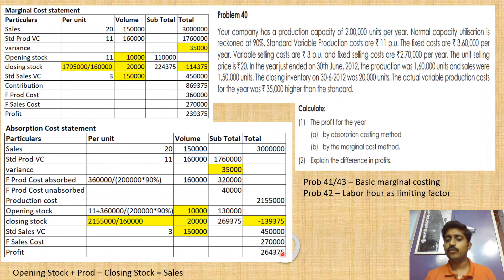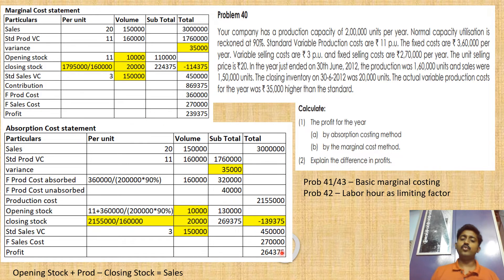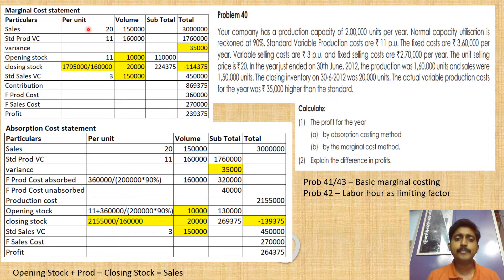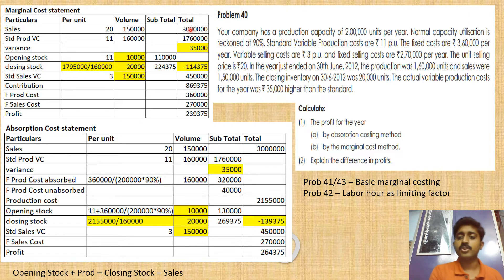Pulling it all together: Sales revenue 30 lakh, minus production cost 21,55,000, plus stock adjustment (negative 1,39,375), minus variable selling cost 4,50,000, minus fixed selling cost 2,70,000 gives a profit of 2,64,375 under the absorption costing method.